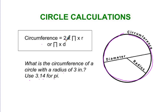The formula is 2 times pi, which in this case is 3.14, times the radius, or you can just do pi times the diameter.